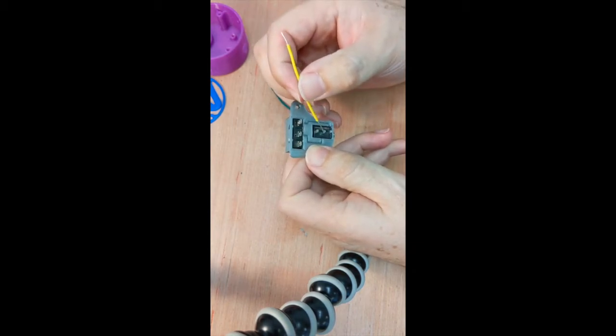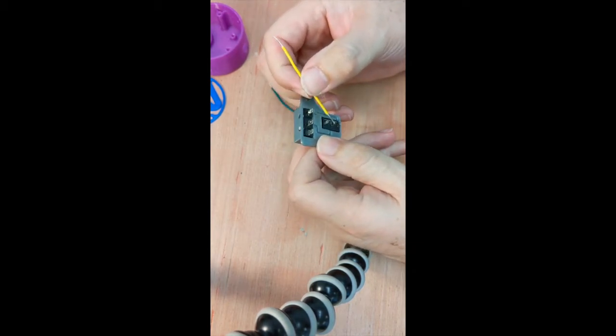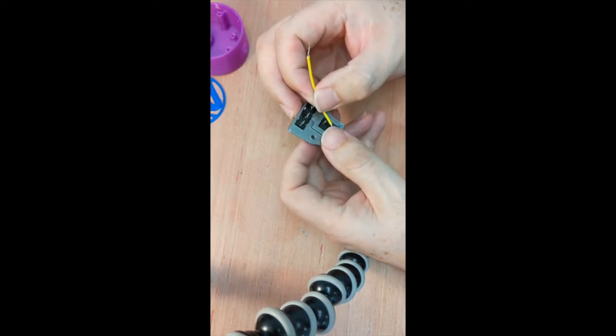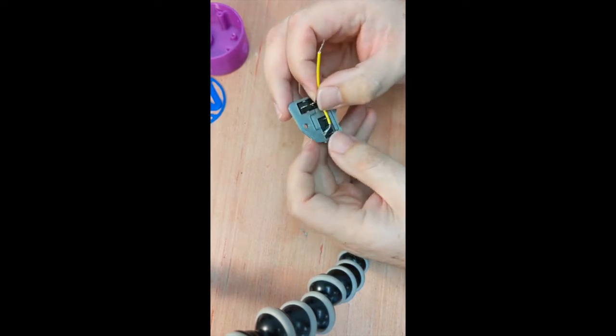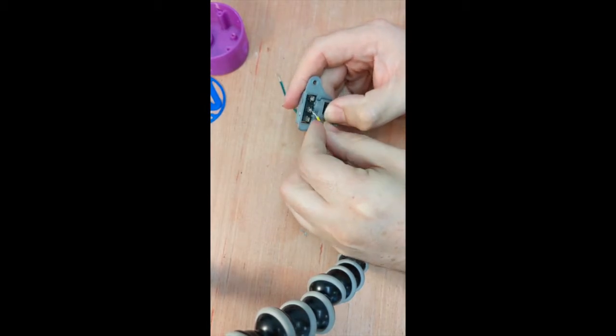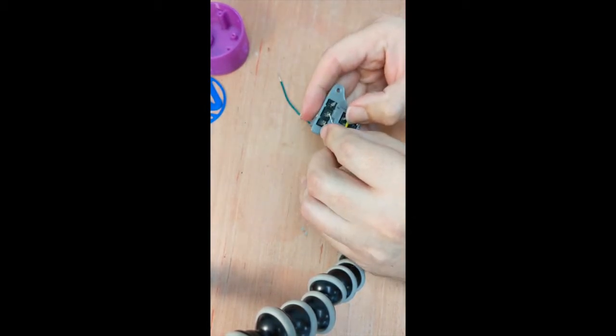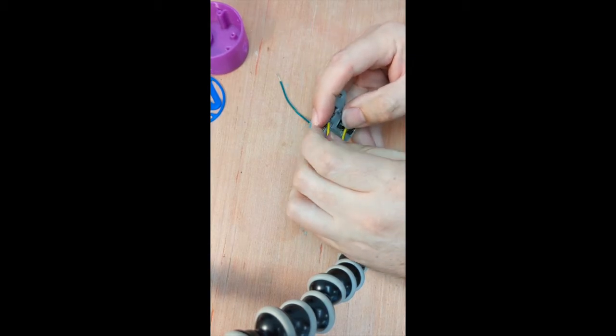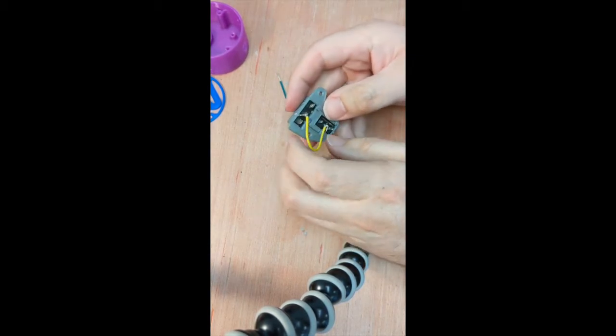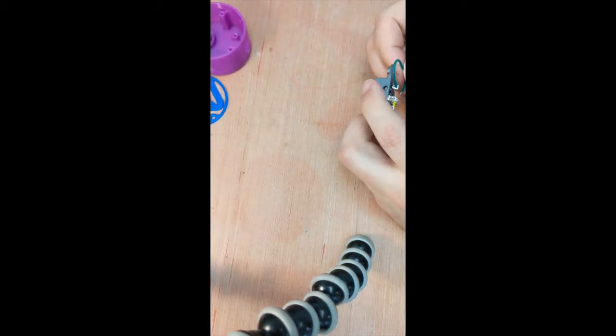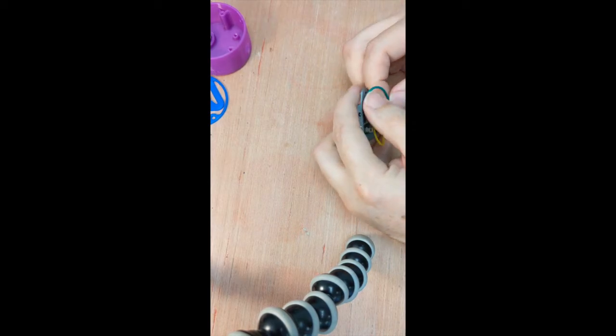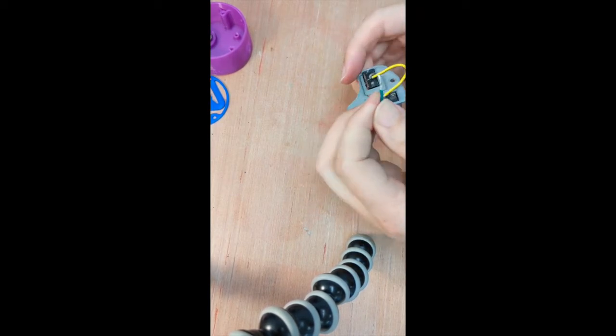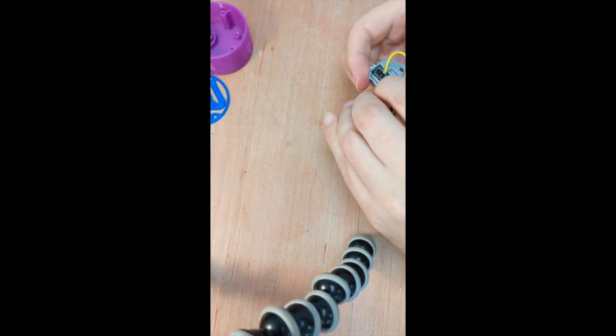With the wire you just prepared, insert one end into the middle terminal on the mono jack and bend the wire ending so it stays in place. Insert the other side of the wire into the middle terminal on the micro switch and bend the wire ending. With the second wire, insert one end into the right terminal on the micro switch. Follow the 3D printed wire channel and insert the other end into the furthest terminal on the mono jack. Bend the wire ending.